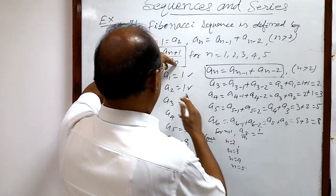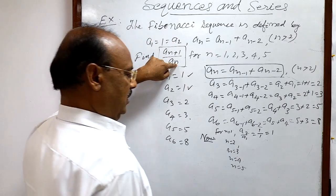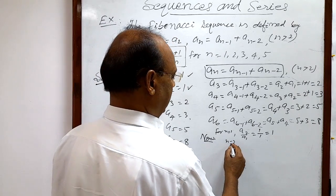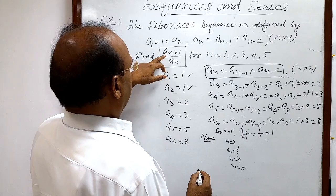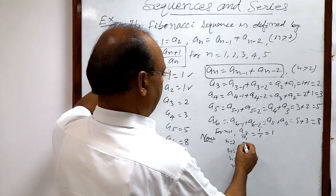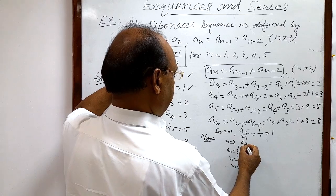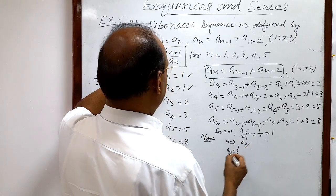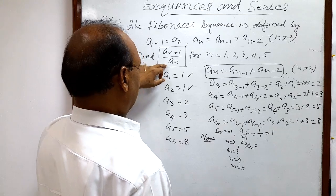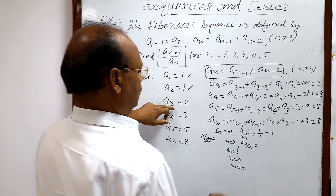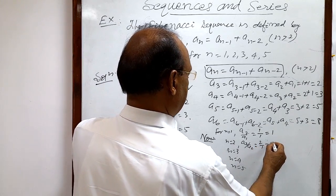a2 is 1 and a1 is 1, so the ratio for n = 1 is 1/1 = 1. For n = 2, the ratio becomes a(2+1) / a2 = a3 / a2. a3 is 2 and a2 is 1, so this equals 2.